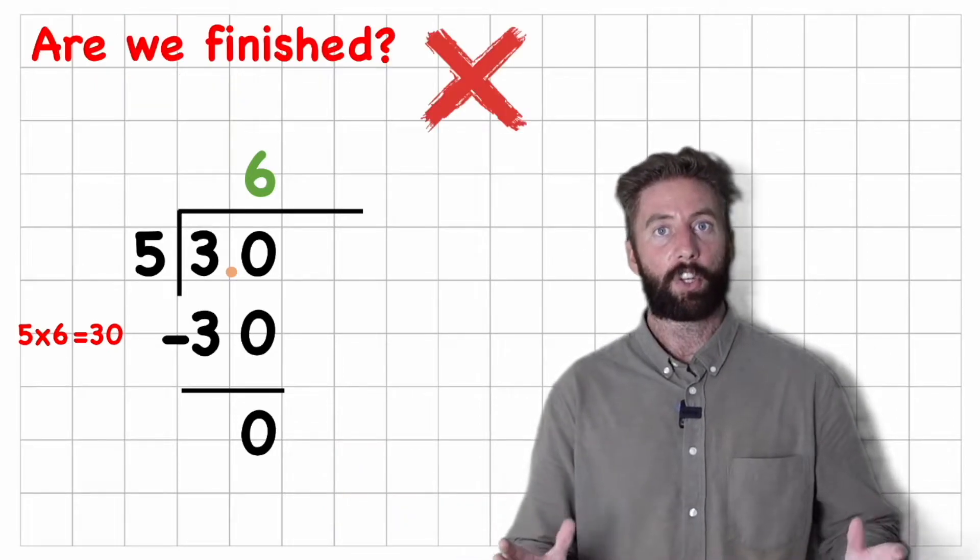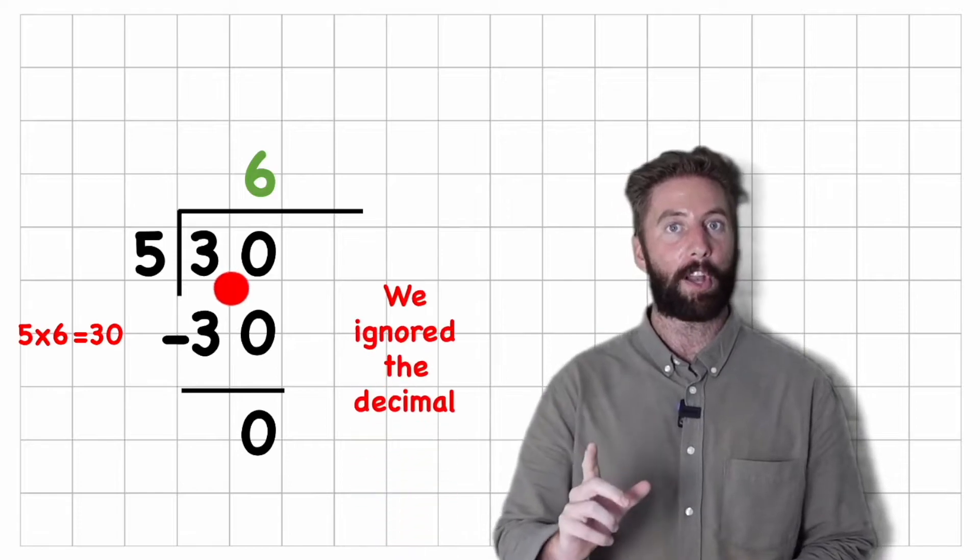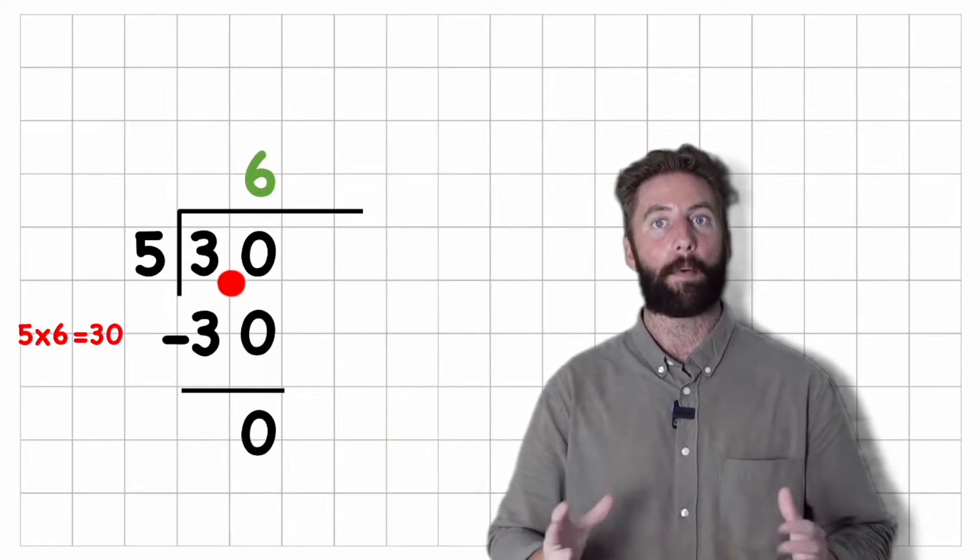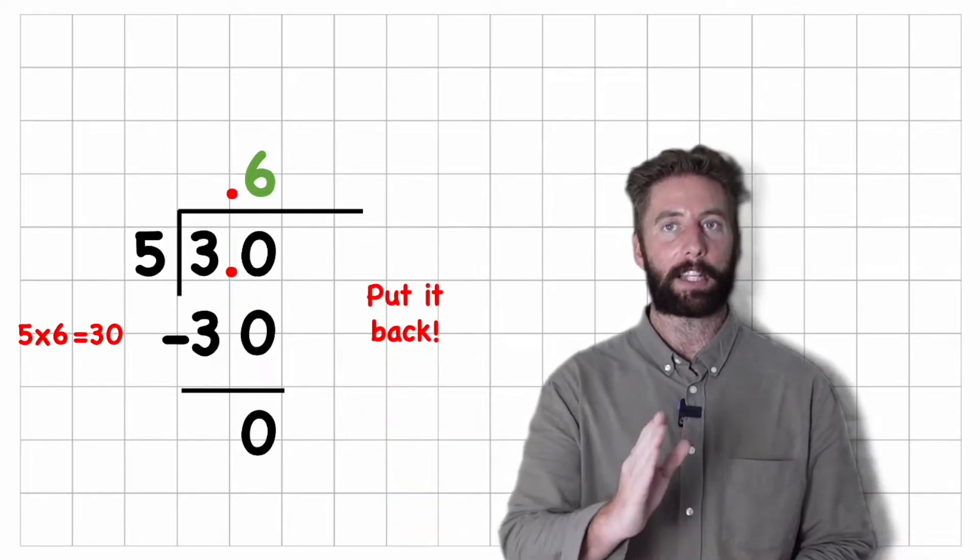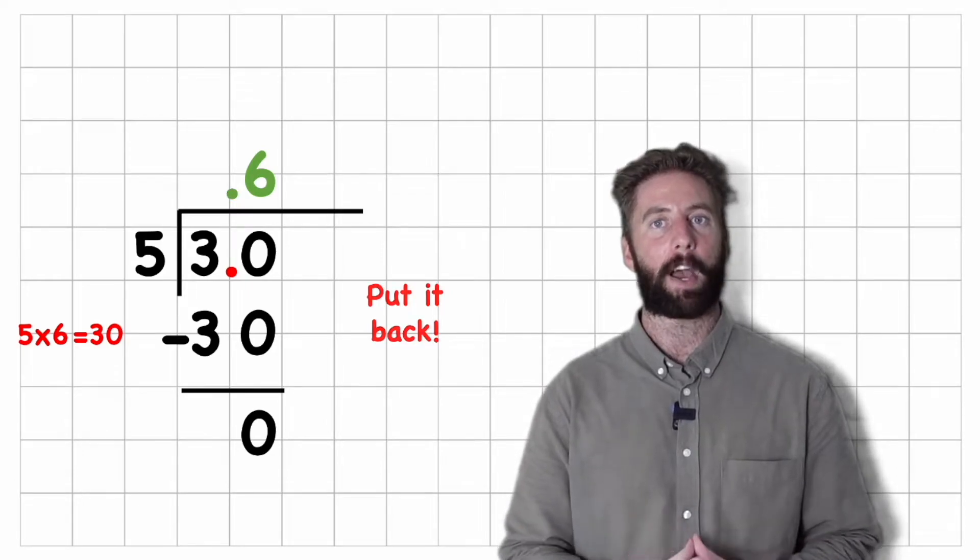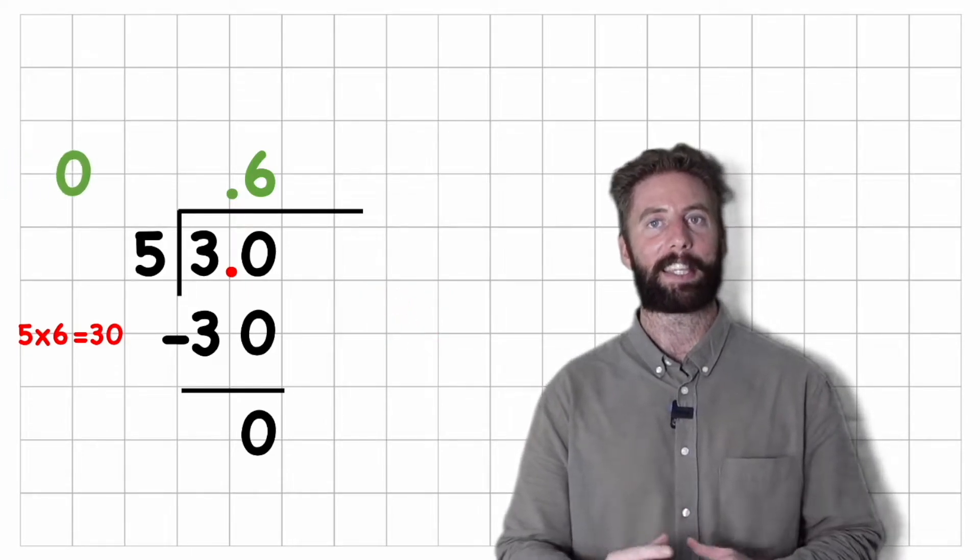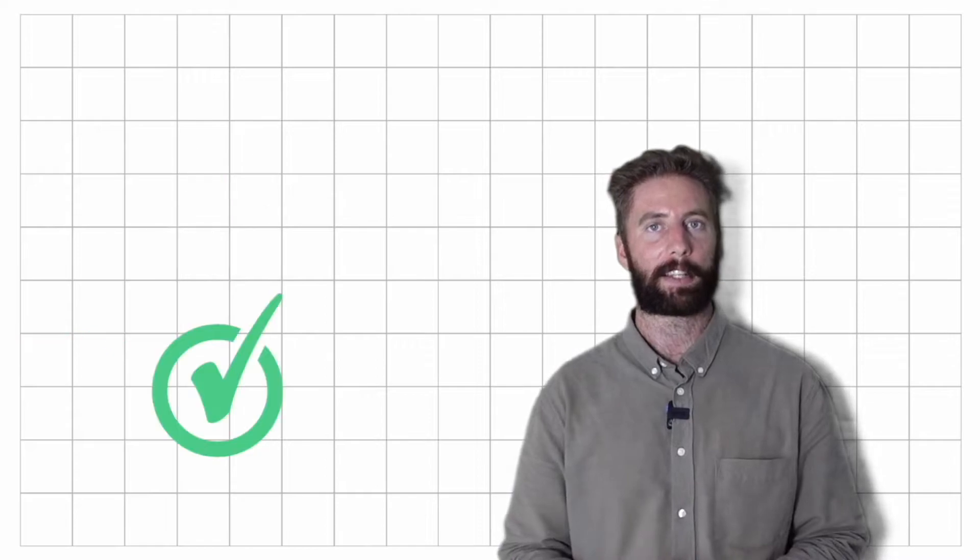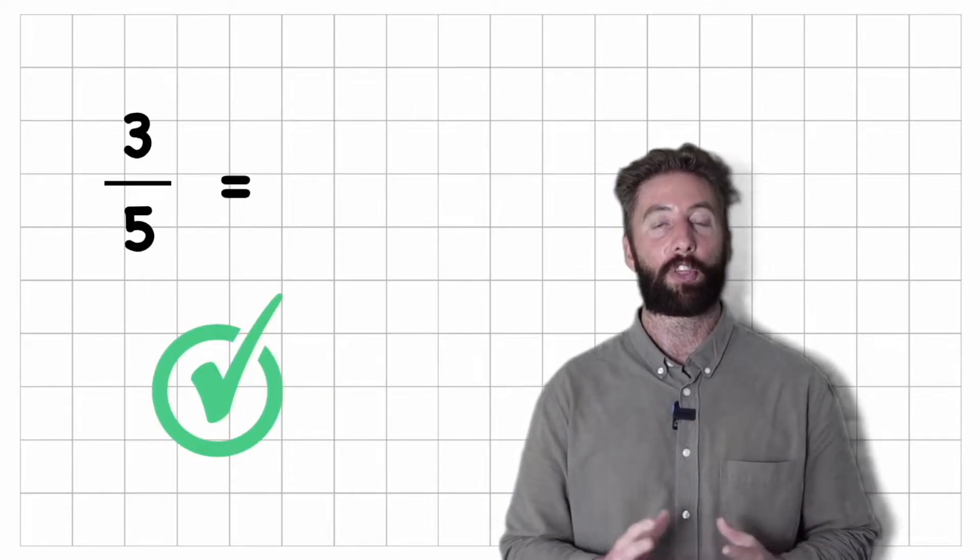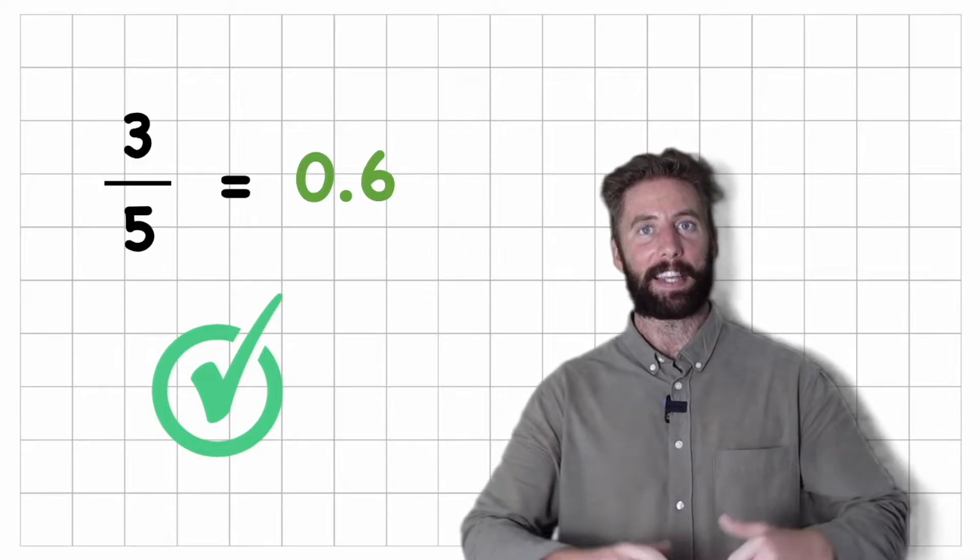And am I finished? No, stop. Remember earlier where we ignored the decimal? Well now we've got to put it back. So let's put our decimal point back and therefore my answer is 0.6 or 0.6. Exactly the same value. So 3 fifths is 0.6. Easy.